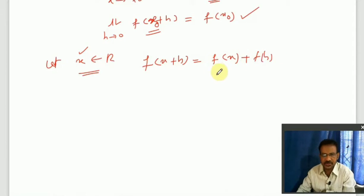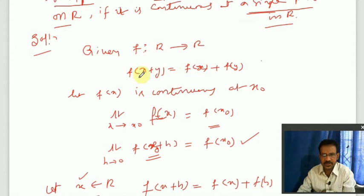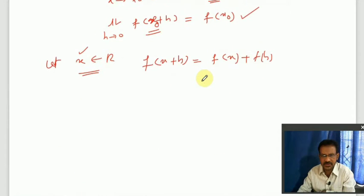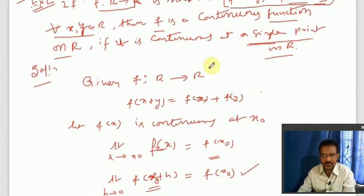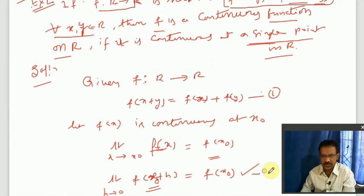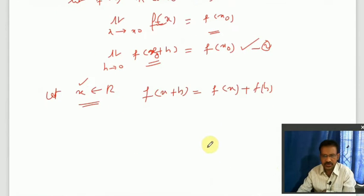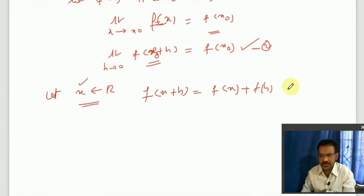By the given functional condition, f(x+y) = f(x) + f(y). So applying this with x and h: f(x+h) = f(x) + f(h). This is derived from condition 1.